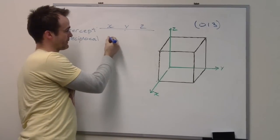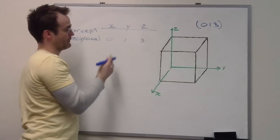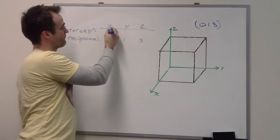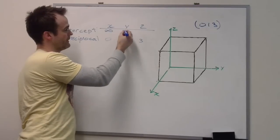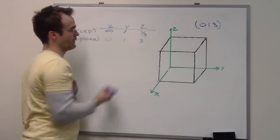If our reciprocal was 013, the intercept that caused that would have been infinity, 1, and 1 third.